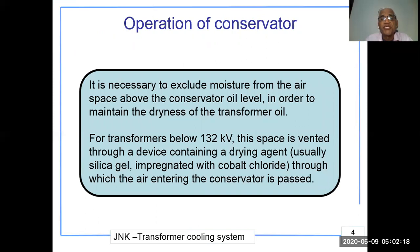For transformers below 132 kV, this space is vented through a device containing a drying agent — usually silica gel impregnated with cobalt chloride — through which the air entering the conservator is passed.